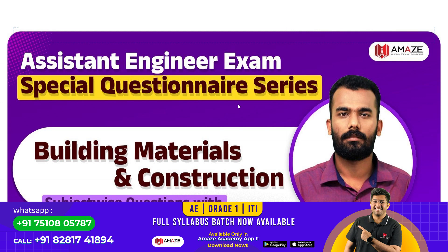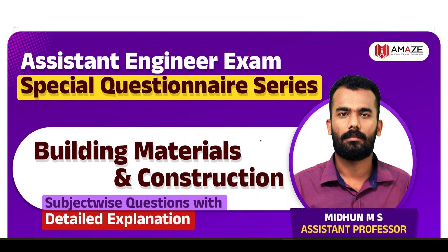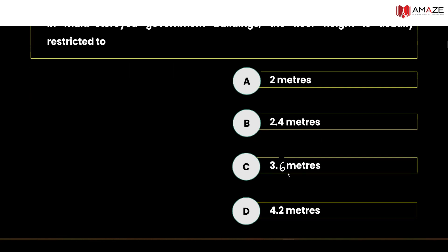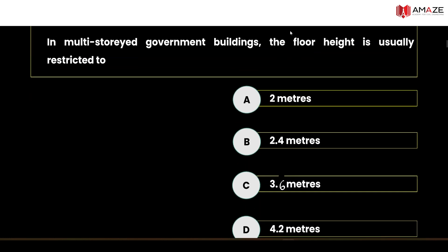We will discuss building materials and construction. In multistoried government buildings, the floor height is usually restricted to 2 meters, 2.4 meters, 3.6 meters, and 4.2 meters. We have a national building code, Kerala Municipality Building Rules, Kerala Panchayat Building Rules. We will discuss the important provisions and the floor height restrictions.